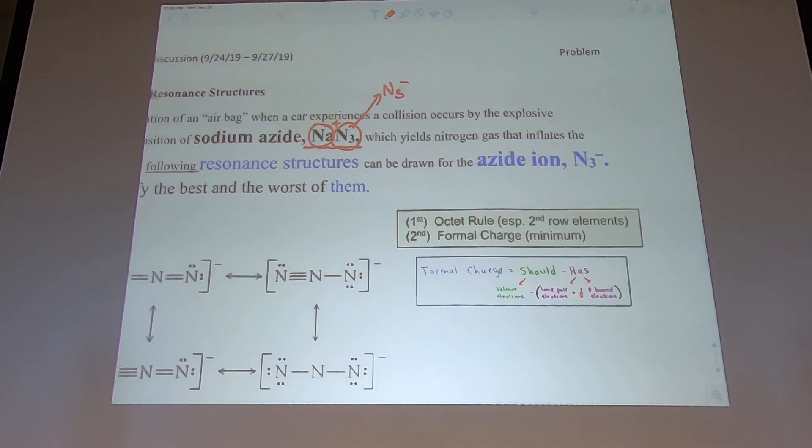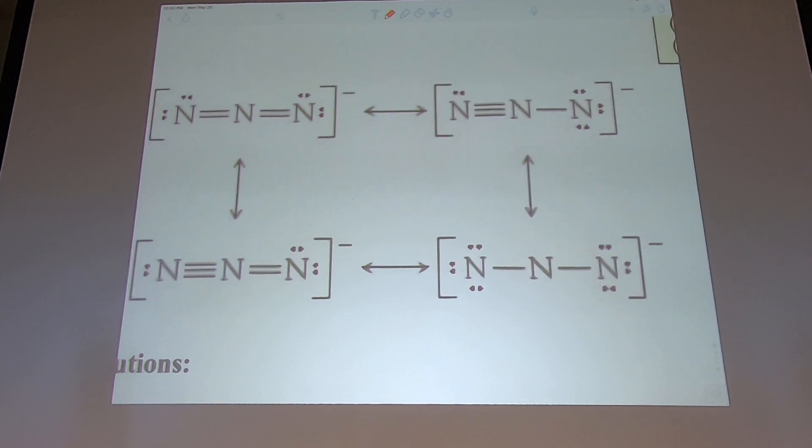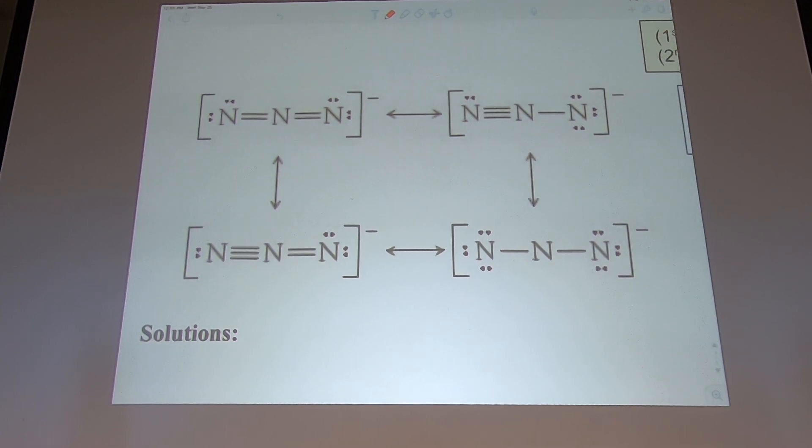And this one is actually giving you the structure looks like this. So this is actually additional redundant practice for you to come up with. Let's look at the octet rule, and let's look at the charge, formal charges. So let's look at here, for example. Nitrogen, how many electrons do they have? Four, right? Not good. How about here? They got ten. Not good. These are violating the octet rule, right? So this is not good.